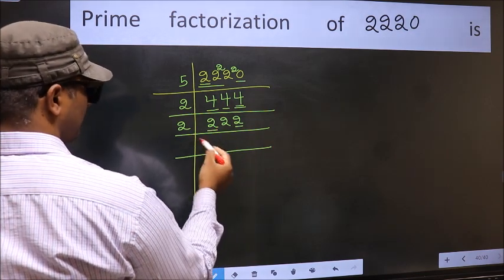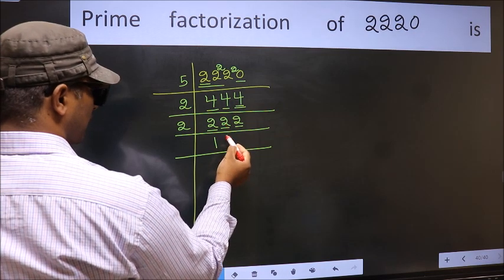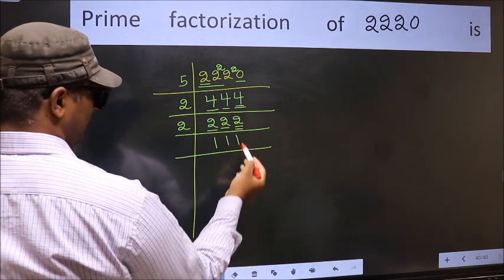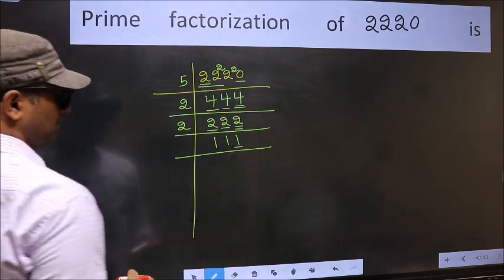First number 2. When do we get 2 in 2 table? 2 times 1 is 2. We have 2 again so write 1 again. We have 2 again so write 1 again. Now the last digit 1, so not divisible by 2.